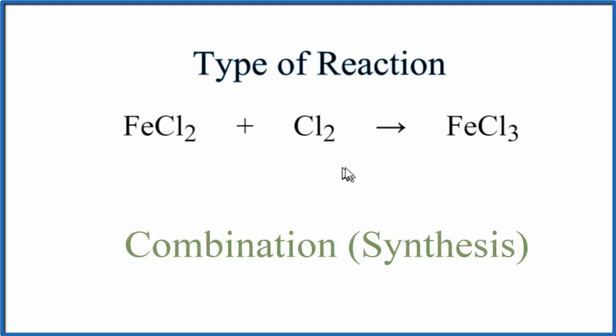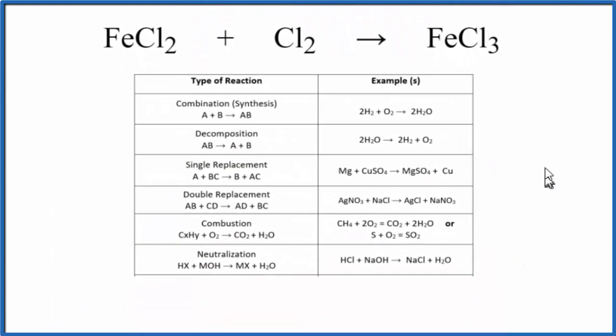We call this a combination reaction. So if we took a look at a table of common types of chemical reactions, we'd see right here is our combination reaction. It's also called a synthesis reaction, as this general form of A plus B yields AB.